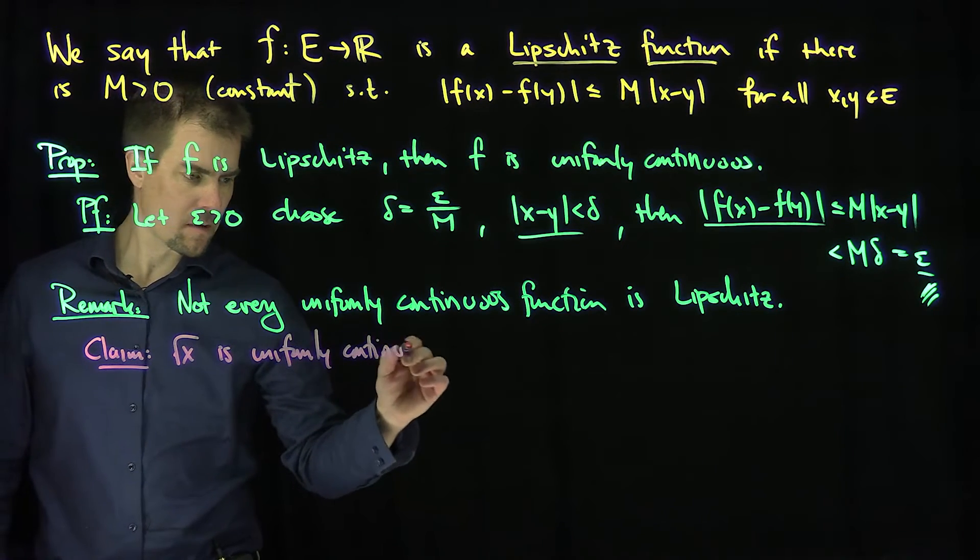What we can do is consider the claim that the square root of x is uniformly continuous on the interval [0, infinity).